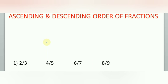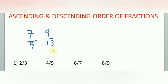Let's take two numbers for explanation of the trick. I'll take six examples. The first example: 7 by 9 and 9 by 13. We don't know which fraction is highest and which is lowest. In both fractions, the denominator is higher than the numerator.